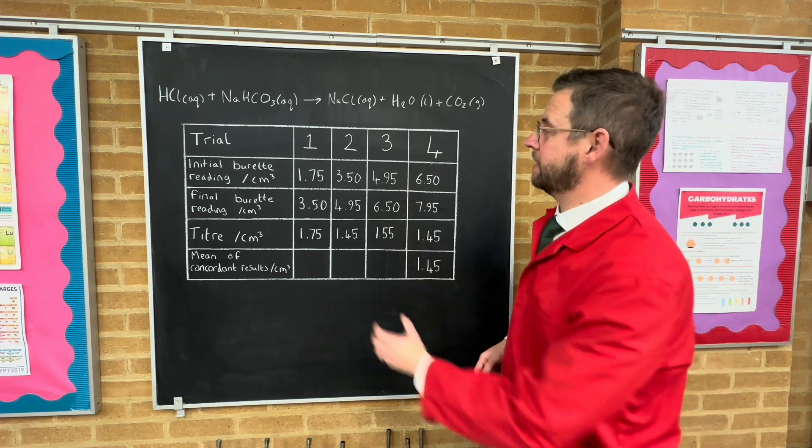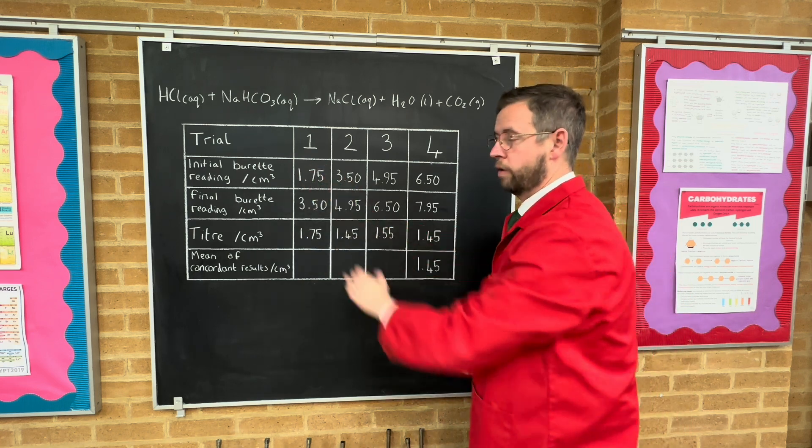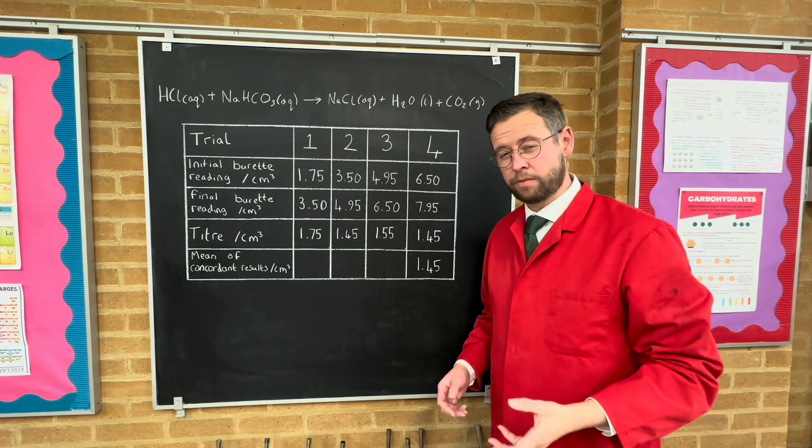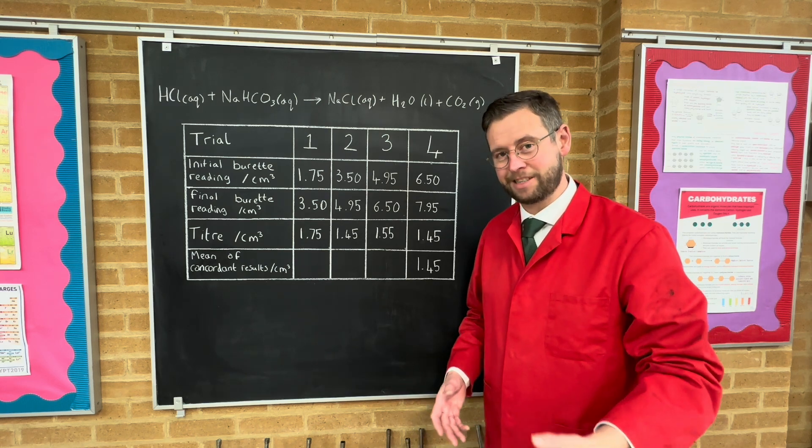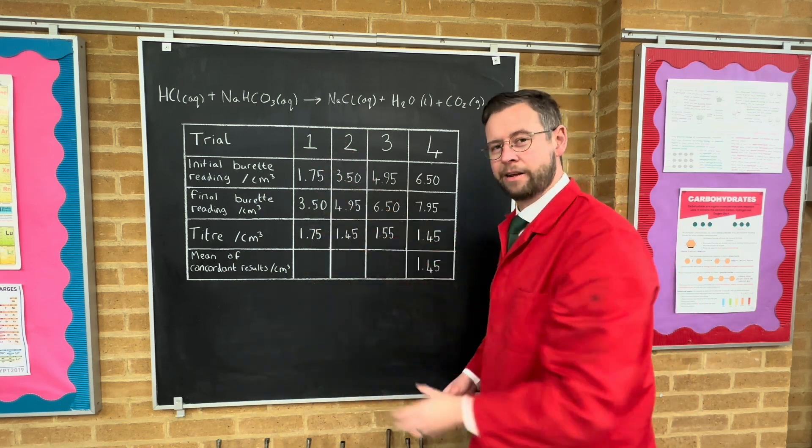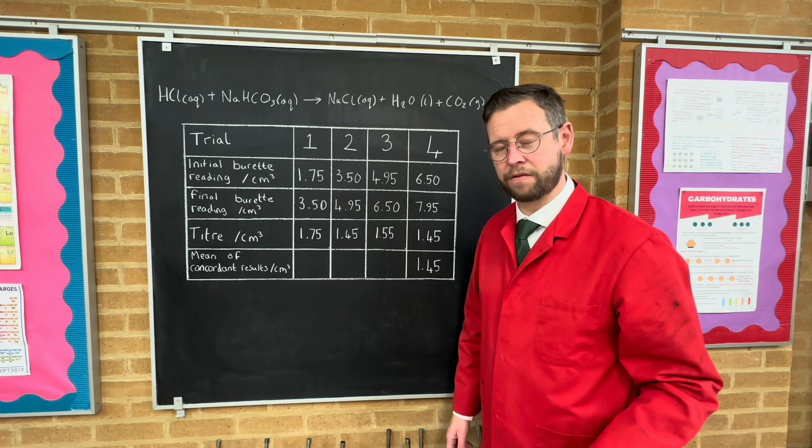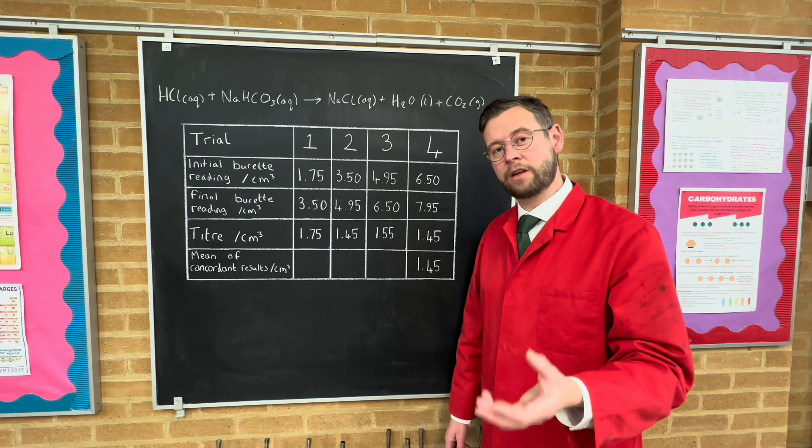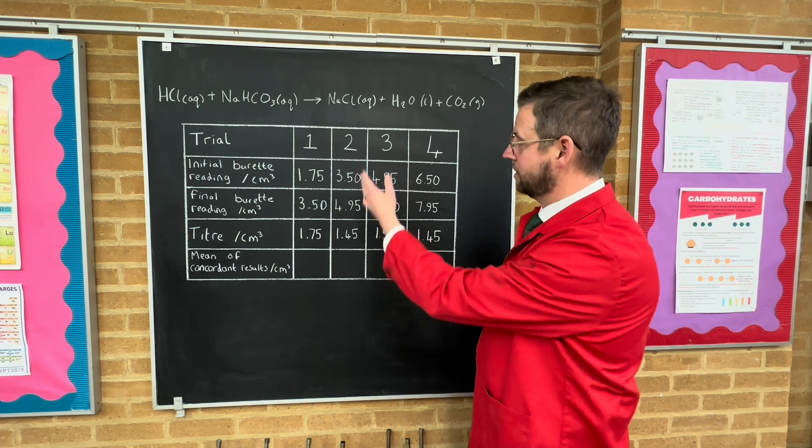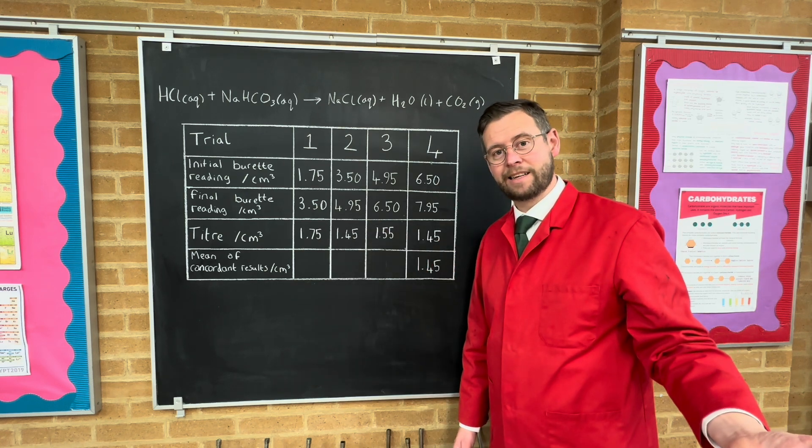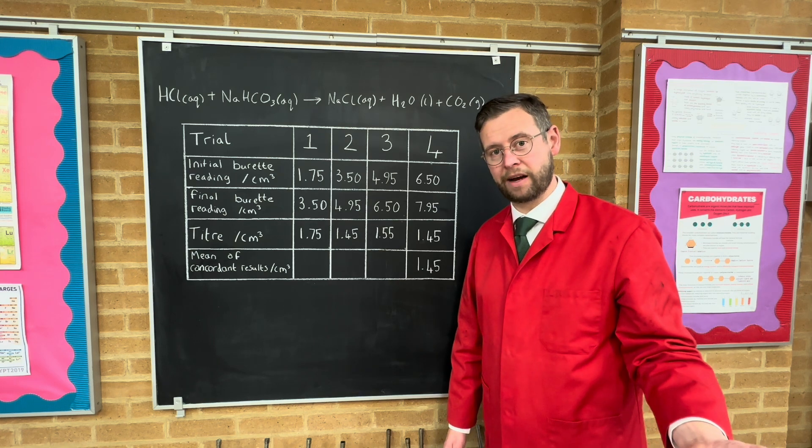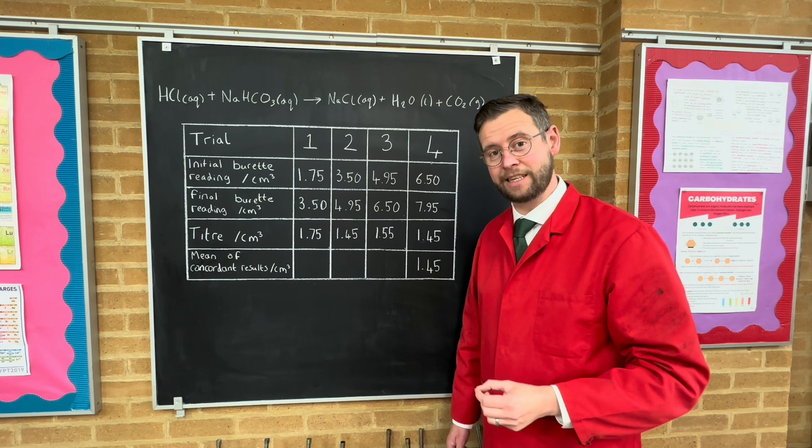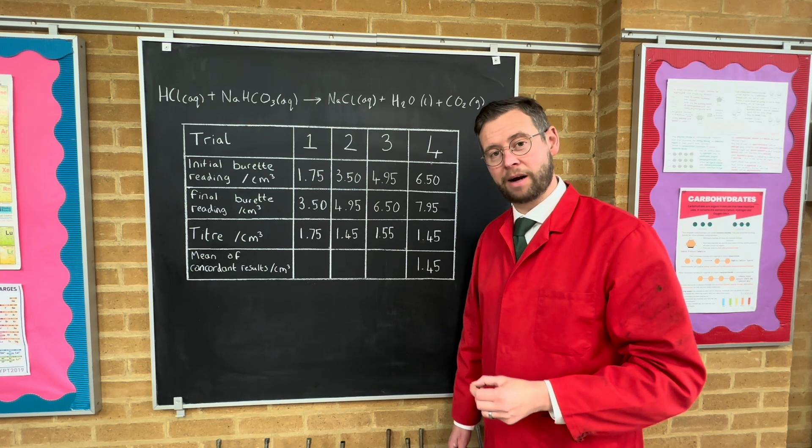You're going to want to record your data like this with the different trials in these different columns and in the rows all of your raw data. So the initial burette reading, the final burette reading, and the titer, which is the difference between the two. The very first time you run the experiment you don't know when the end point is coming and you might miss it, but you'll get a feeling for roughly where it is. So nearly always trial one is just preliminary and it's a write-off. But after that you're looking for concordance. Now the tolerance of the burette is 0.05 centimeters cubed, so you're looking for two results that are the same as this. In my second run and fourth run, I did get these two concordant results. It was 1.45 centimeters cubed both times. So there's my average and that's the number I'm going to go for. That is how many centimeters cubed of hydrochloric acid I need to neutralize 25 centimeters cubed of my sodium hydrocarbonate solution.